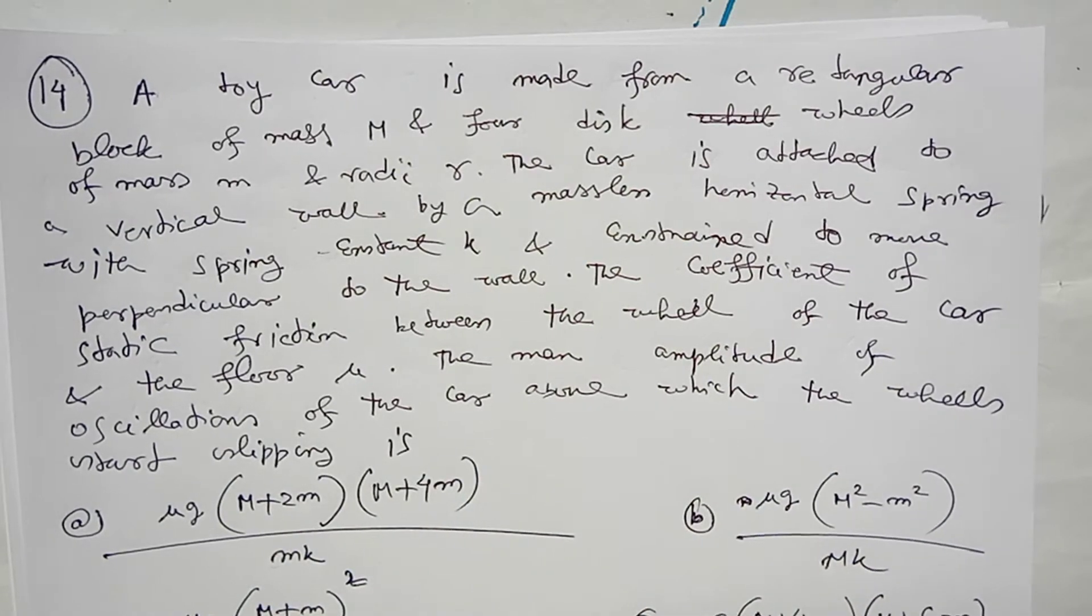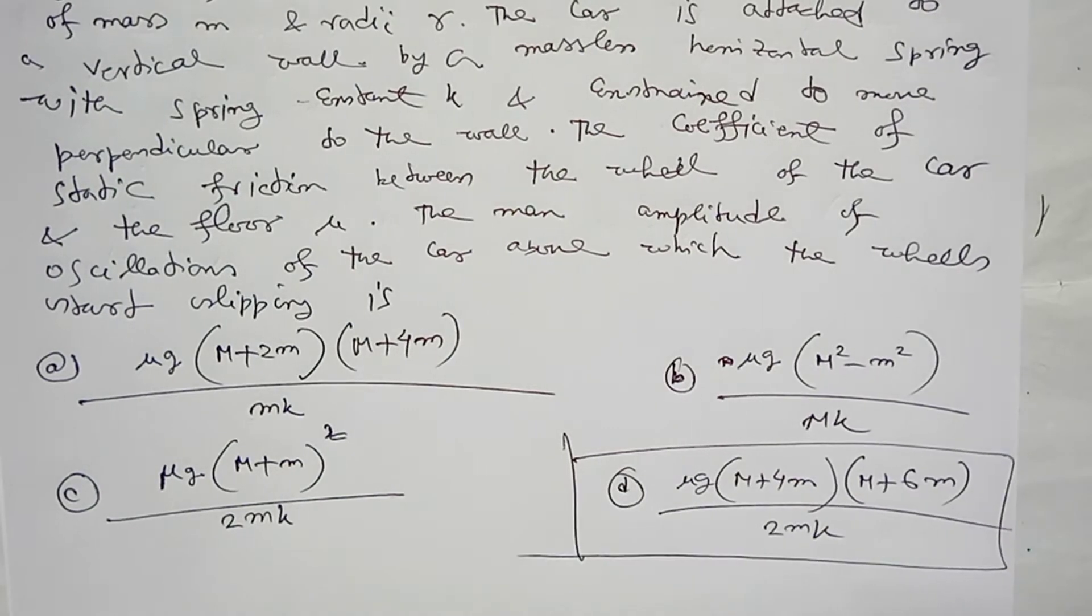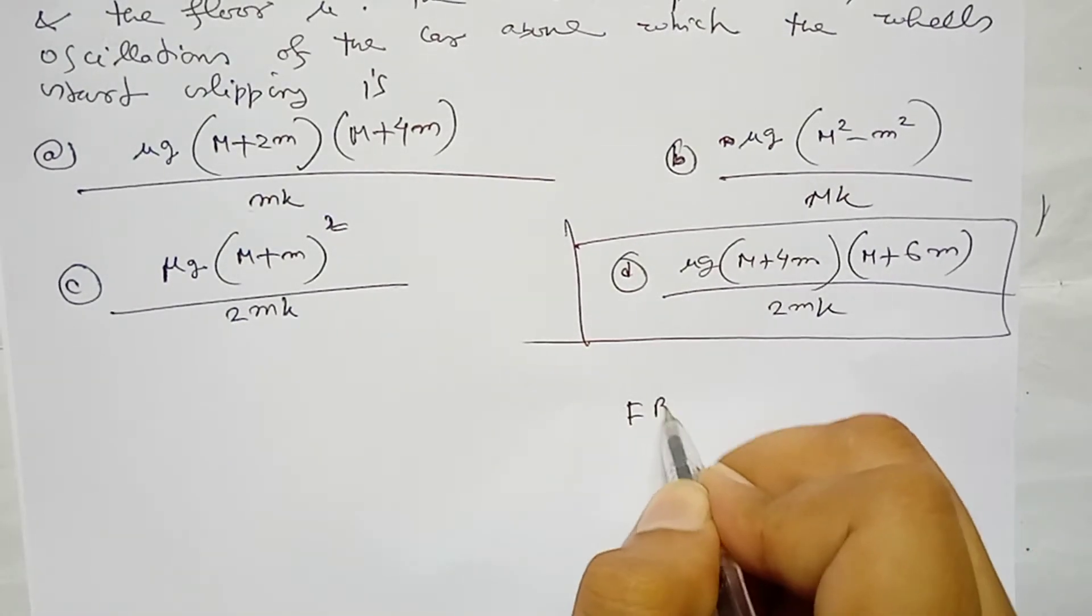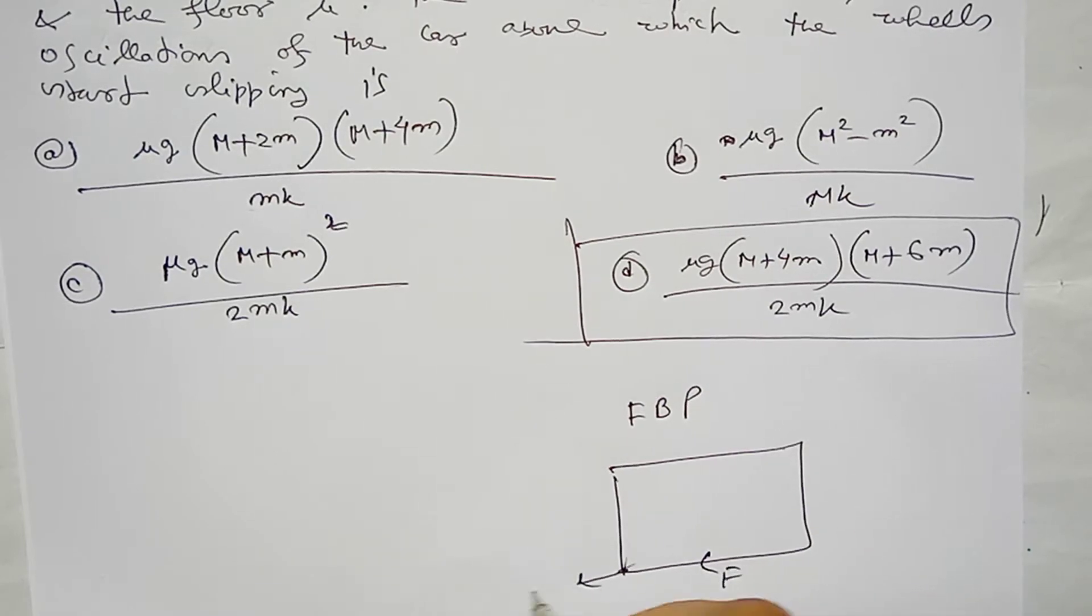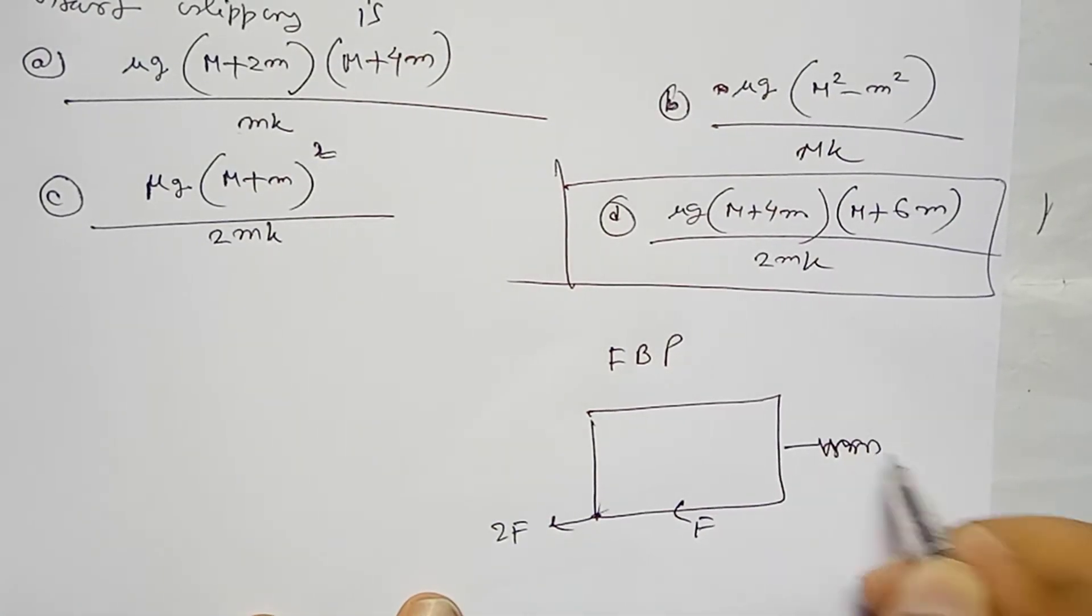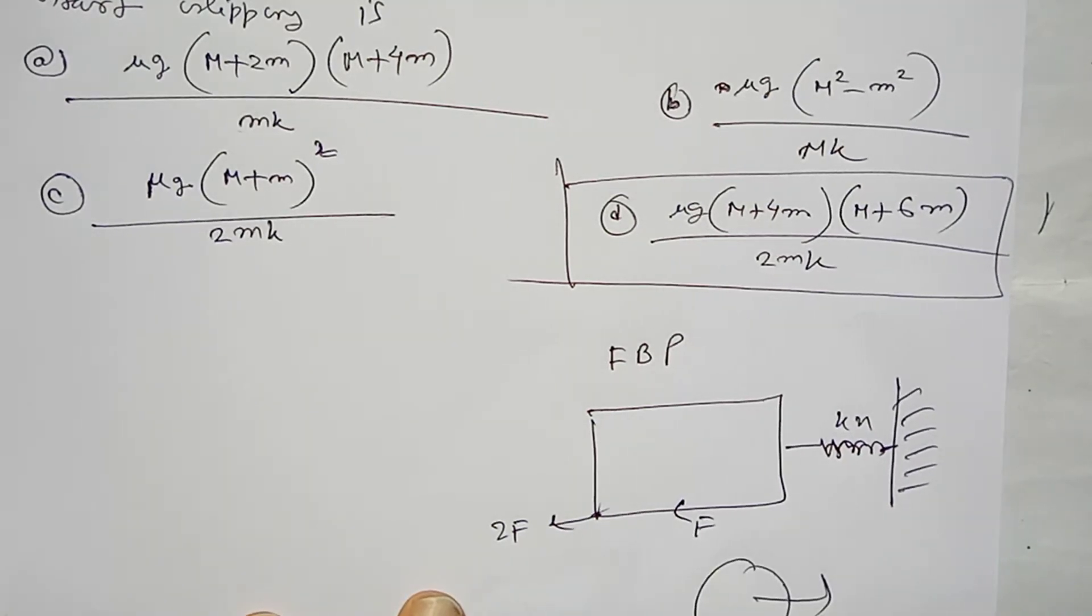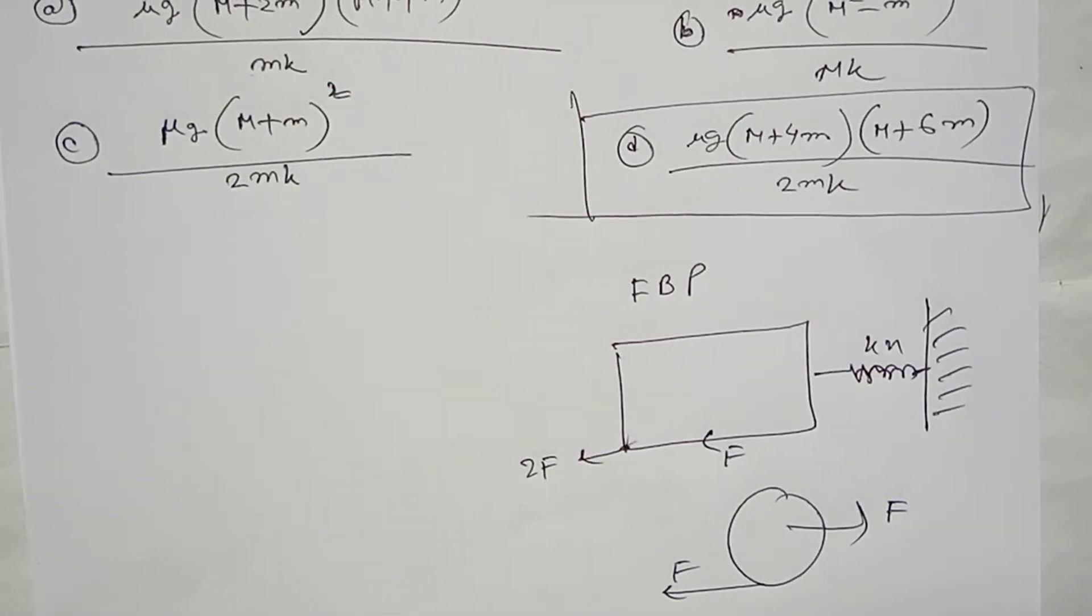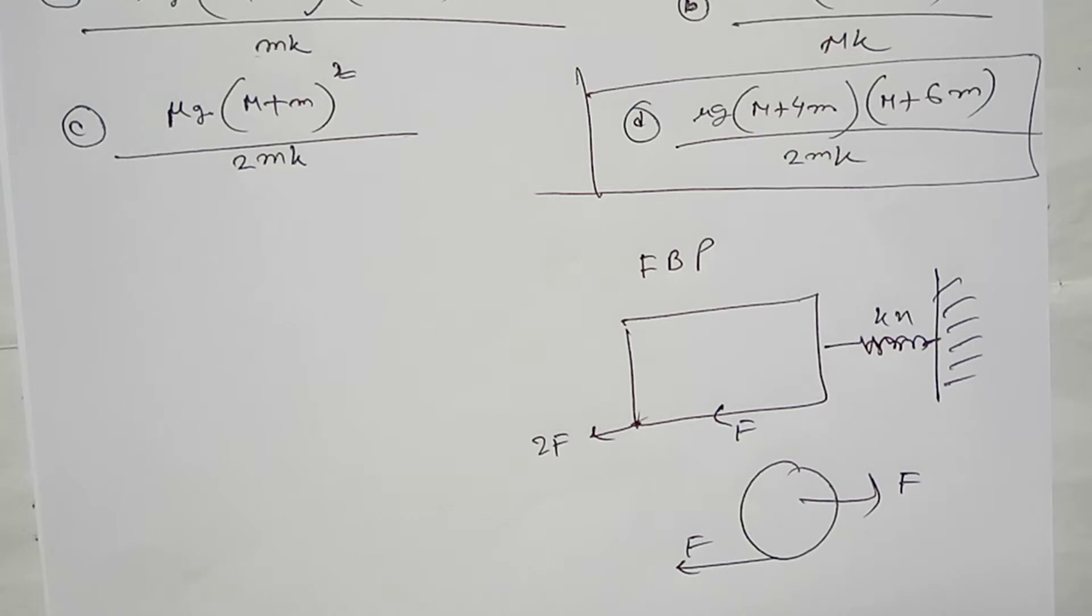There are four options given. Let's draw the free body diagram. For the car, there is a spring force here. The wheels touch the floor, so there is a force from each wheel. For four wheels, each force is F.